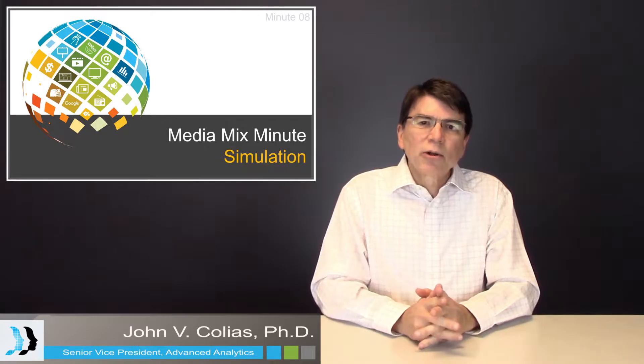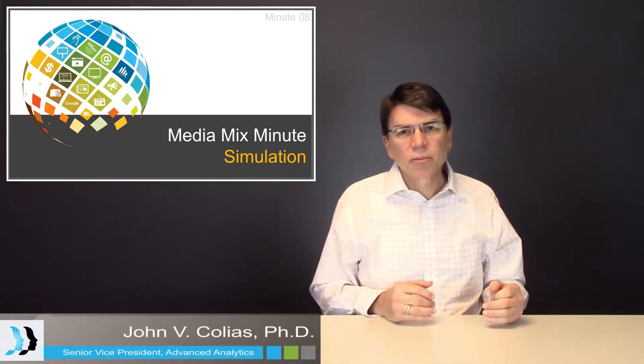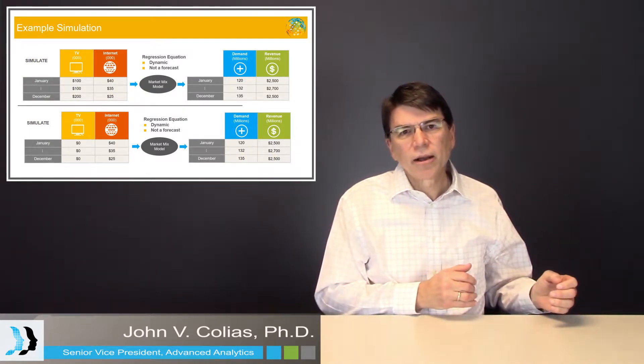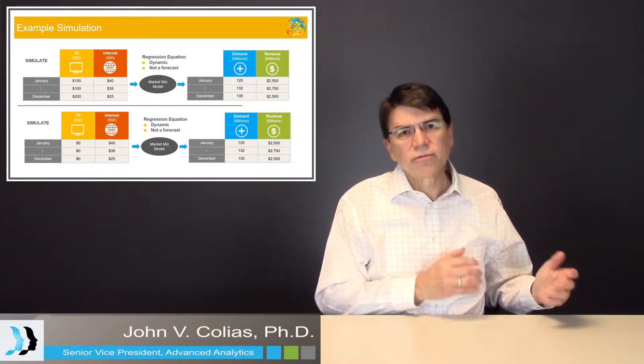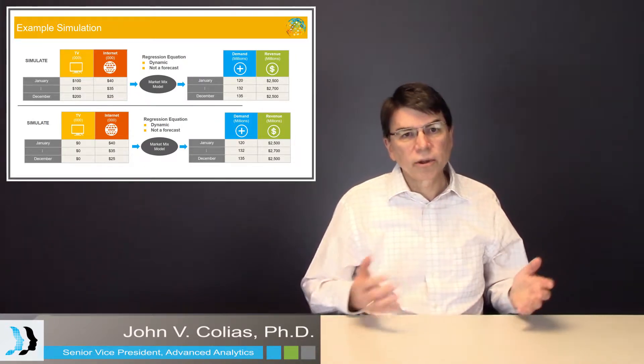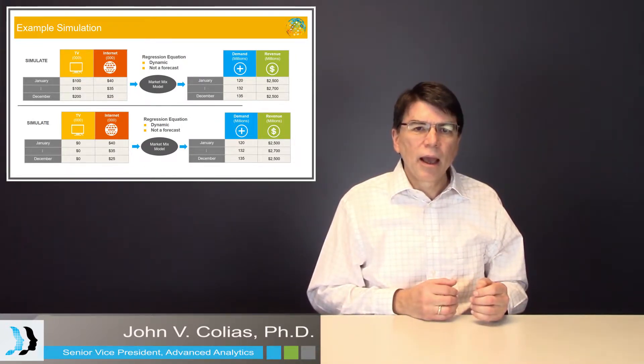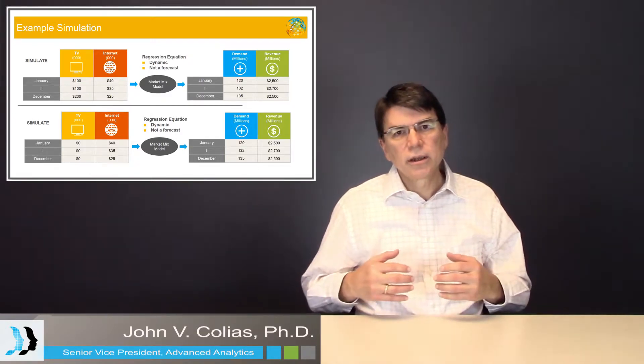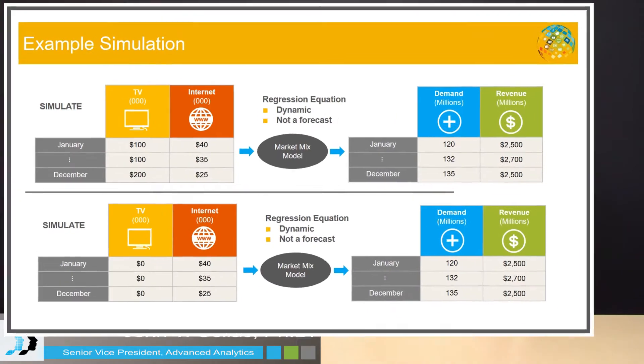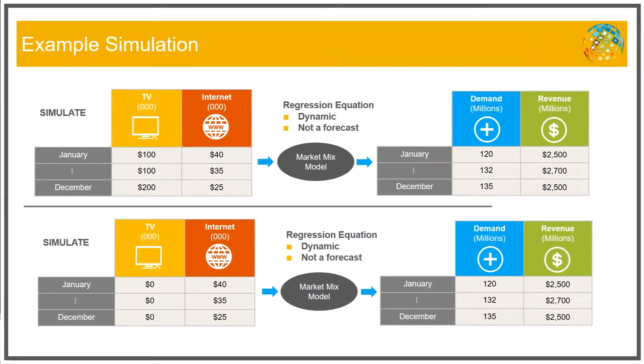As we mentioned in an earlier episode, Media Mix Modeling produces an equation, and that equation has inputs and outputs. And the inputs are the units of activity for TV advertising and other types of advertising, and the output is the units of products sold.